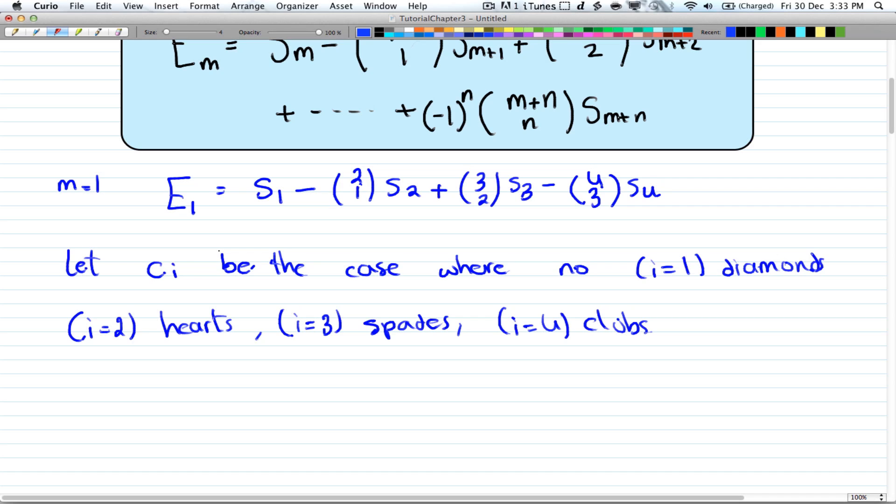And i equals 4 you'll have clubs. So i is just a range from 1 to 4. So case 1 no diamonds appear. Case 2 no hearts. Case 3 no spades. And case 4 no clubs appear.